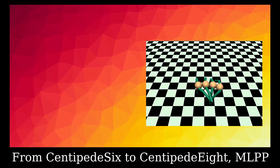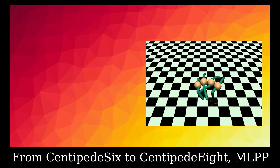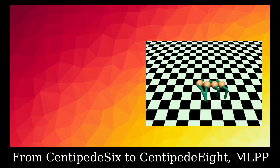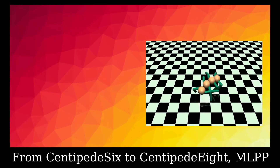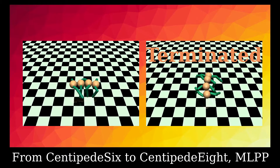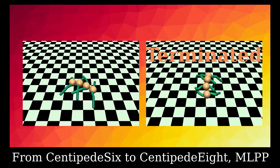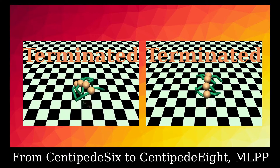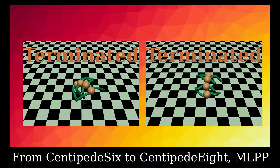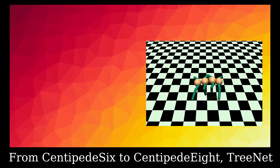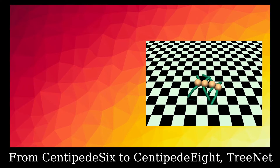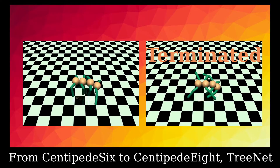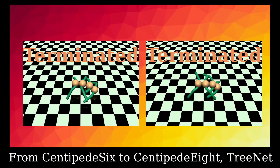In MLPP (MLP Pre-trained), we hope to transfer knowledge by loading the pre-trained weights which have the same shape. In TreNet, we use a Depth 1 tree to gather information from each body part.